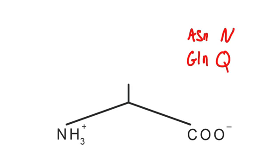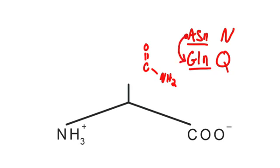The functional group in these two side chains is the carboxamide group, so we draw that in since we know we're going to have to work it in somehow. Looking at the abbreviations, A comes before G, so we start with asparagine. You draw the carboxamide moiety and connect it to the backbone — that is asparagine. For glutamine, since it comes after asparagine, you just add one more carbon and connect everything.